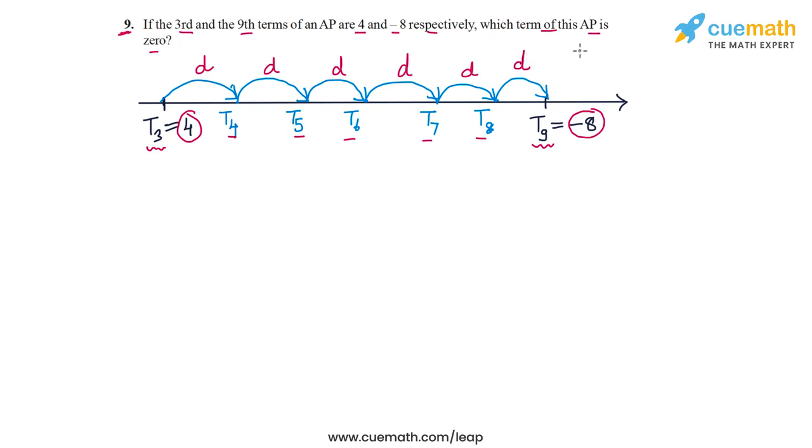So six jumps of the common difference, or 6D, takes us from 4 to minus 8. What is the difference between minus 8 and 4? Minus 8 minus 4 is minus 12. So 6D must equal minus 12, or D must equal minus 2.